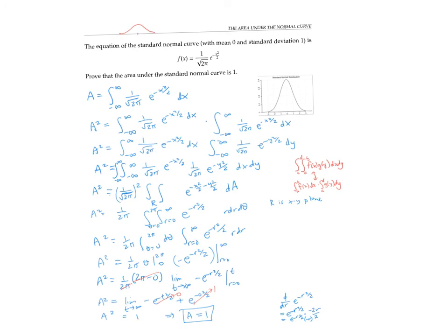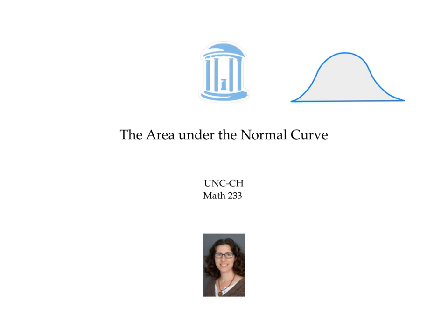And the trick for proving it had to do with taking area, squaring it, going up a dimension, and then using polar coordinates to compute it. What genius. I've heard this proof attributed to Gauss, but I don't actually know the history of it. So if anyone else knows, please leave me a note in the comments. So I hope you enjoyed this proof that the area under the normal curve is one.